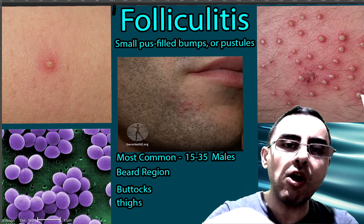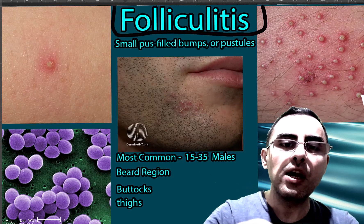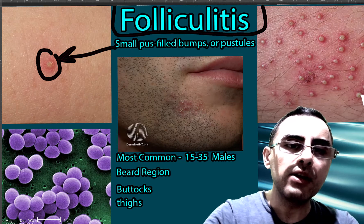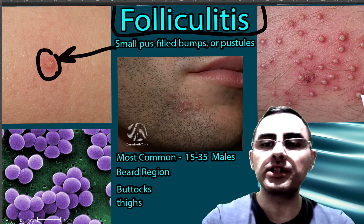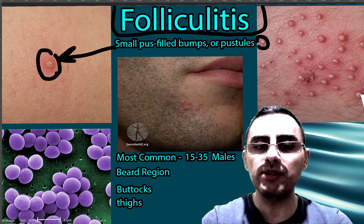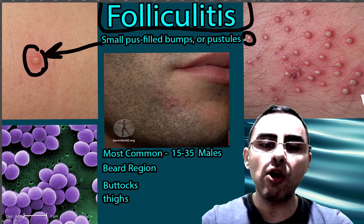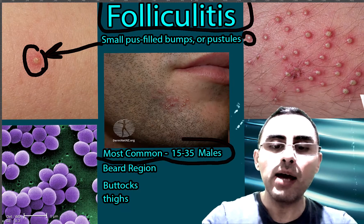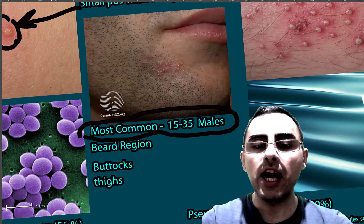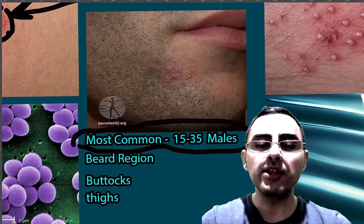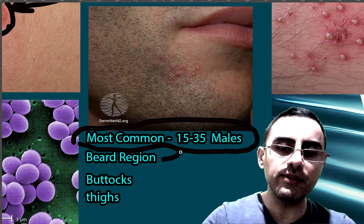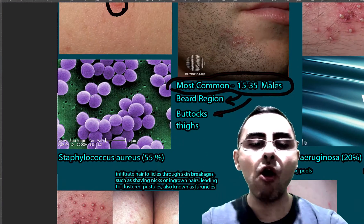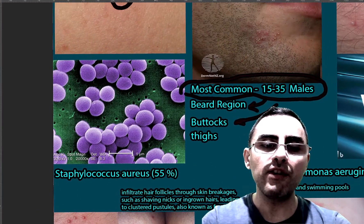Folliculitis is a common skin infection characterized by small pus-filled bumps called pustules, which you can see on the images. Folliculitis most commonly affects males aged 15 to 35, but it can occur at any age and any sex. The most commonly affected areas are the beard region, buttocks, and thighs.